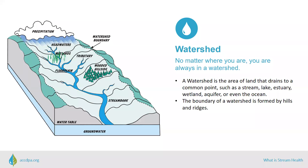No matter where you are, you're always in a watershed. Do you know which watershed you live in? A watershed is an area of land that drains to a common point, such as a stream, lake, estuary, wetland, or even the ocean. Water flows downhill, so the boundaries of watersheds are formed by the topography of the land, meaning watersheds are divided by hills and ridges.